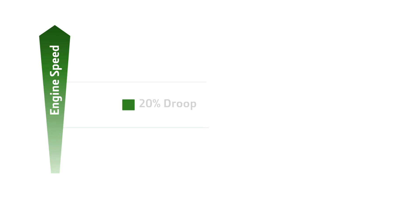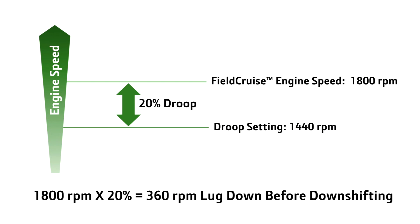When field cruise is on with a setting of 1800 RPM, the droop setting is now 20% of 1800, or about 360 RPM before it begins to downshift. You can see that by using a percent setting, the transmission can automatically recalculate the shift points when maximum engine speed is adjusted.